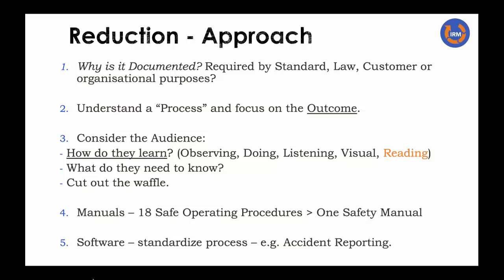Another technique: if you've got 18 or 90 safe operating procedures that every single one of them includes purpose, objectives, definitions, related documents, and related legislation — that adds up to hundreds of pages. A technique we've used for HR, safety, and quality procedures is to put them all into one safety manual or HR manual. It can be a way of cutting down just the bulk, and you don't have to repeat all the definitions all of the time.